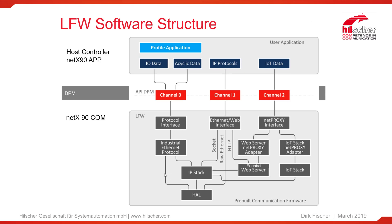There is more functionality inside our firmware. We have a second channel, channel 1, which features also a mailbox interface. This channel acts as a so-called Ethernet and web interface. We have three kinds of functionalities over this channel. One functionality is the so-called socket interface. Your host application has a direct connection through this channel to the TCP/IP stack, and it is possible to open sockets to communicate using TCP/IP or UDP-based communication.